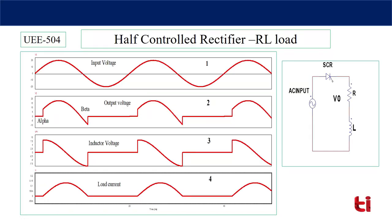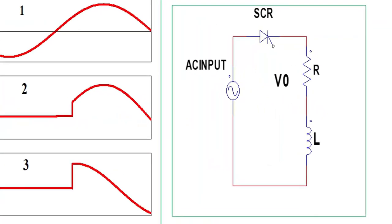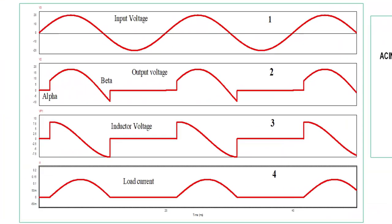In the circuit you can see AC input is there, a thyristor is connected with RL. Across the RL load the output voltage we will measure. As it is a series circuit, input current is equal to load current, and that current we will measure. The first waveform is your input voltage, second one output voltage, third inductor voltage, and fourth one inductor current — or you can say load current.